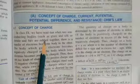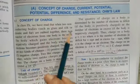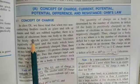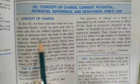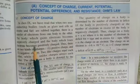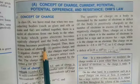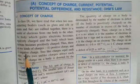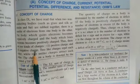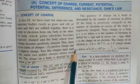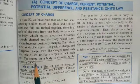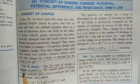Now, concept of charge. In class 9th, you have read that when two non-conducting bodies, such as glass and silk or ebonite and fur, are rubbed together, there is a transfer of electrons from one body to the other. The body which gains electrons becomes negatively charged and the body which loses electrons becomes positively charged. There are two kinds of charges: positive charge and negative charge. Two like charges repel each other, while two unlike charges attract each other.